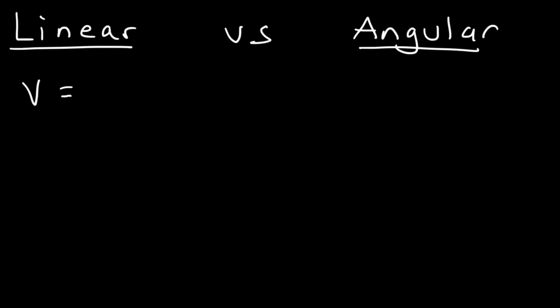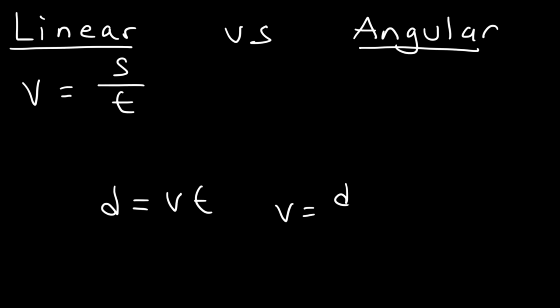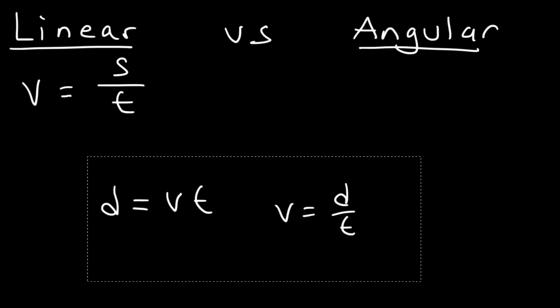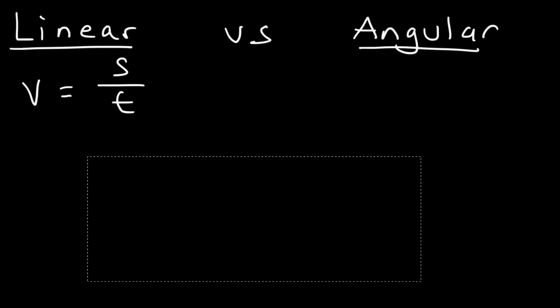Linear speed can be calculated in terms of a circle — it's the arc length divided by t. You may have seen the equation d = vt, or d = rt in physics. If you solve for v, it's distance over time. Since we're dealing with circles, the distance around the circle, or portion of the circle, could be described as the arc length. So v = s over t.